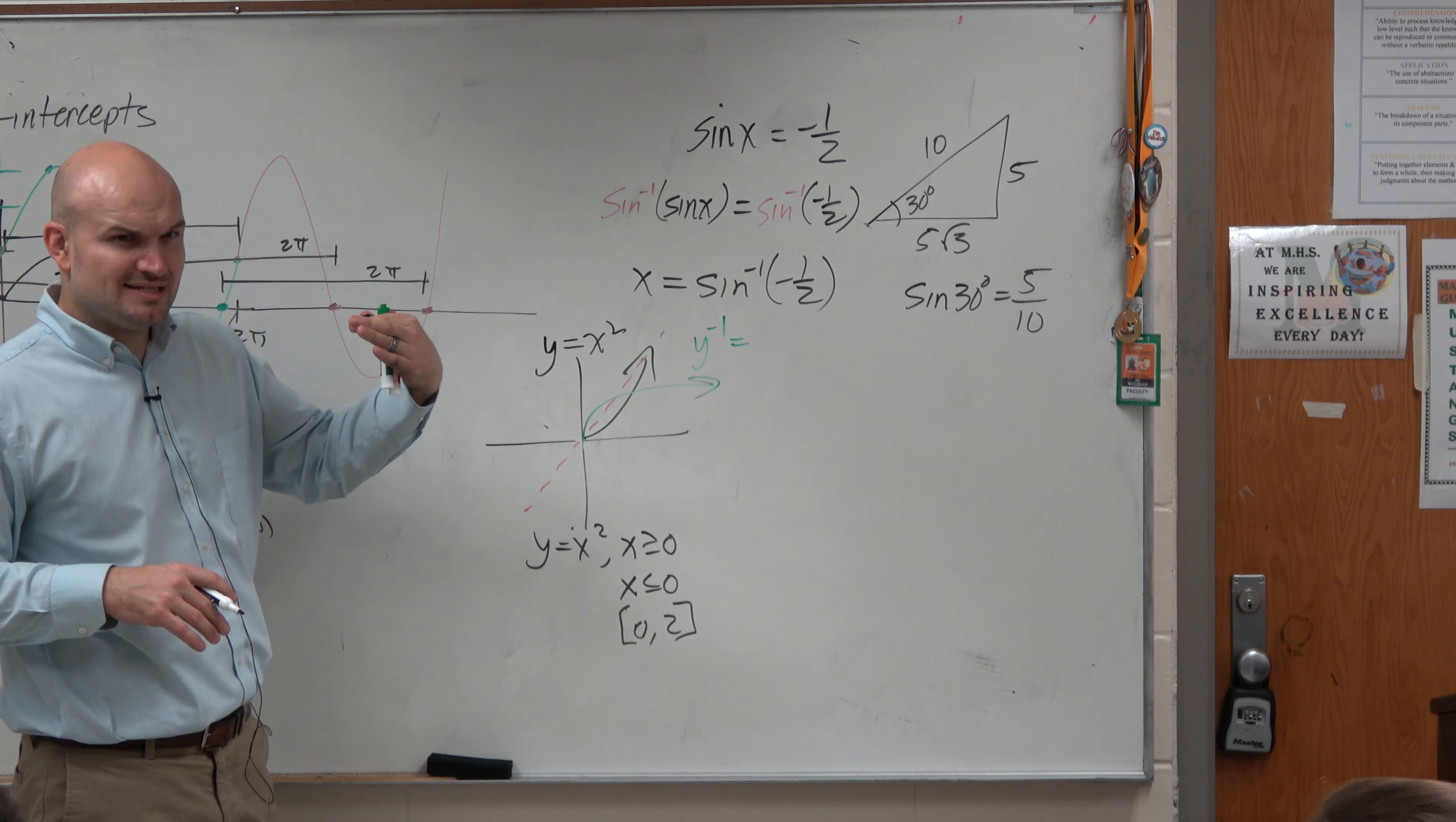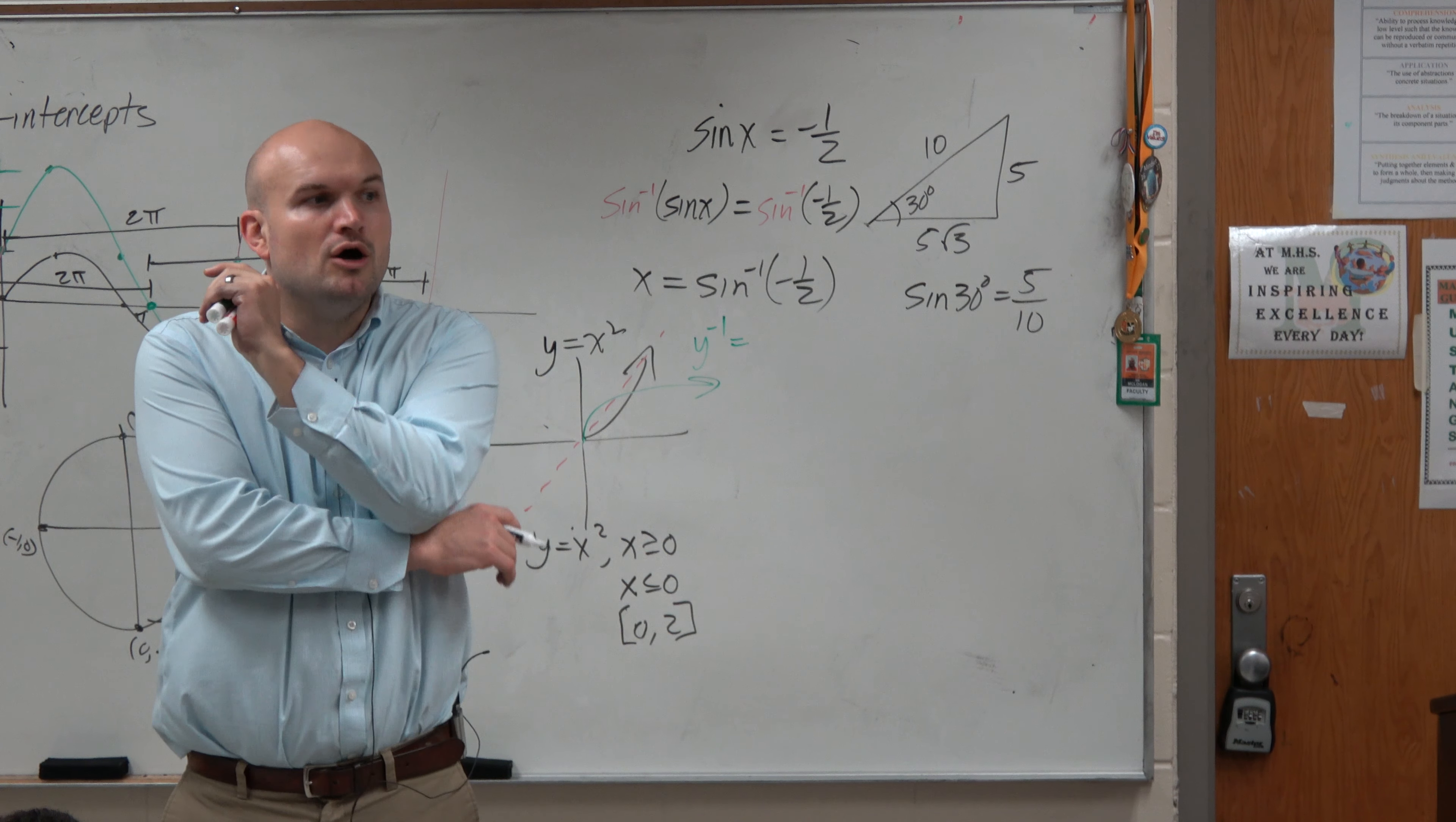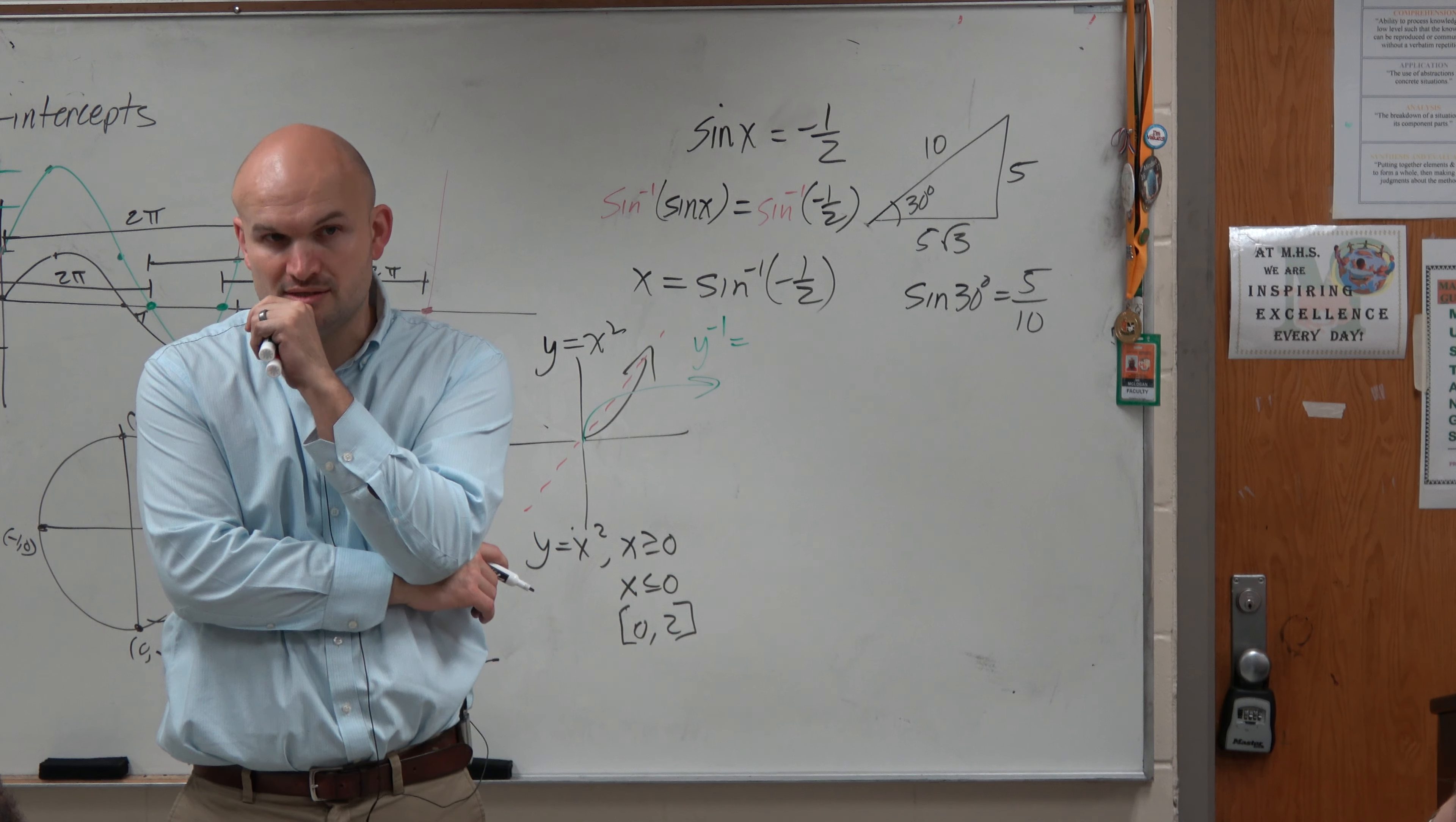So if you think about the horizontal line test, you immediately probably start thinking of sine, cosine, tangent, and be like, oh, we have a problem then. Because doesn't sine, cosine, tangent all fail the horizontal line test miserably? Right?